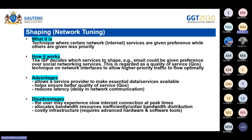Advantages of shaping: it allows a service provider to make essential data or services available, ensures better quality of service, and reduces delay in network communication. Disadvantages: the user may experience slow Internet connection at peak times when social networking has been given lower priority; the ISP allocates bandwidth resources inefficiently; it is an unfair bandwidth distribution; and costly infrastructure is required.